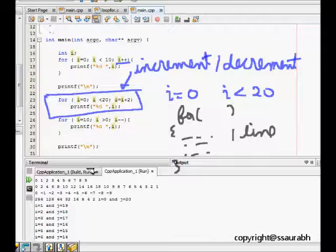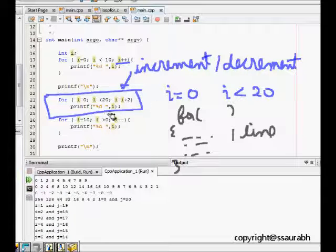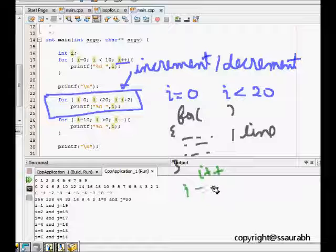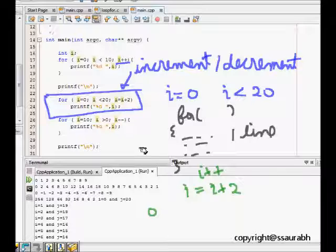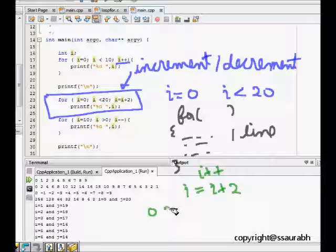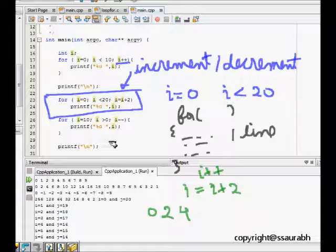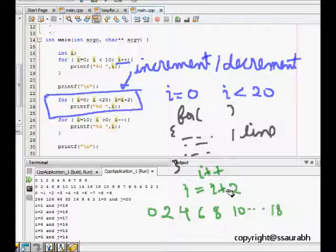Let's see i is equal to 0, i is less than 20. Now this time the increment which is happening is not i plus plus but it is i is equal to i plus 2. So what happens is i is 0 initially. It prints the value 0 here. Then i becomes i plus 2 which is now it becomes 2. 2 is less than 20. So it goes here, it prints 2. Now again 2 is less than 20. So i is equal to i plus 2, it becomes 4. And then 4 is printed. Similarly it goes like this 6, 8, 10 and it goes till 18.